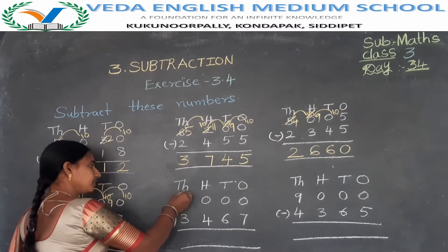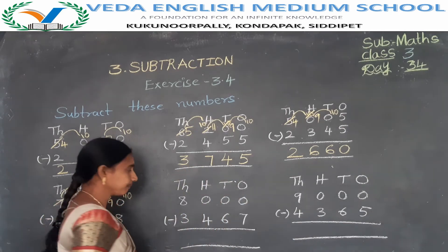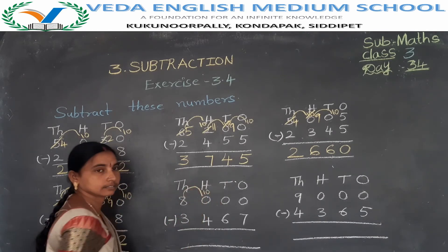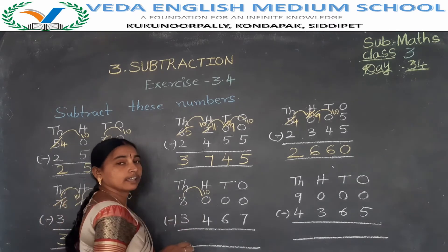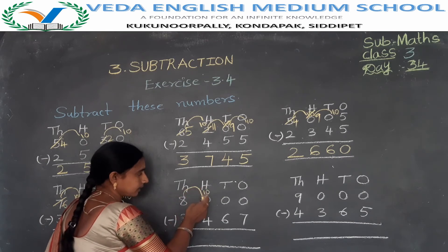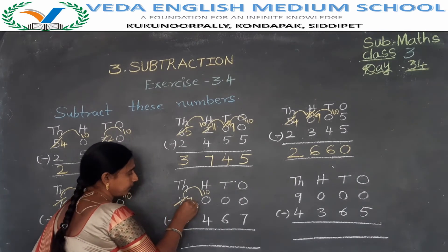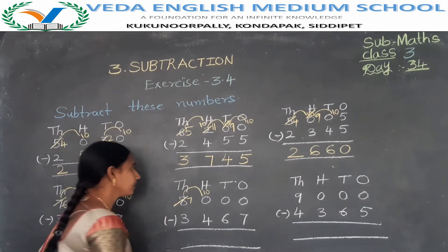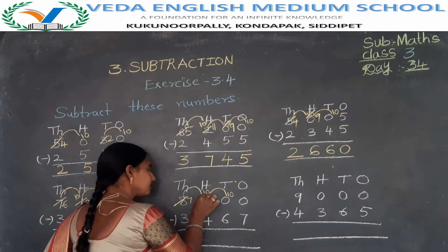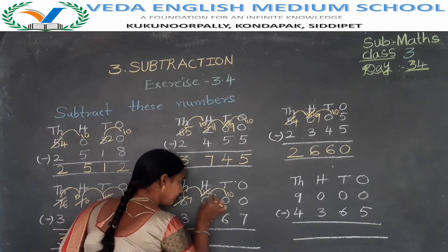First take a borrow from the thousands place to the hundreds place: 10 plus 0 is 10. First there were 8 thousands; 1 thousand has gone to the hundreds place — remaining 7 thousands, so 8 becomes 7. Now take a borrow from the hundreds place to the tens place: we have 10 hundreds; 1 hundred goes to the tens place, so 10 becomes 9.